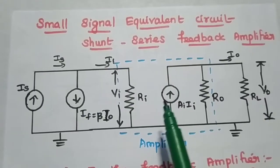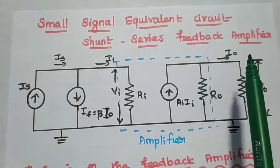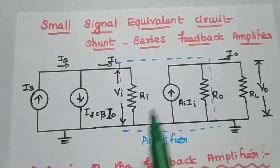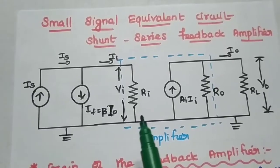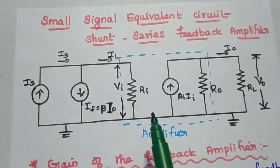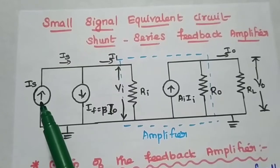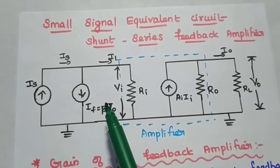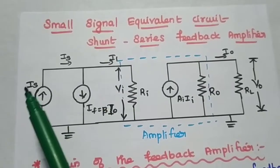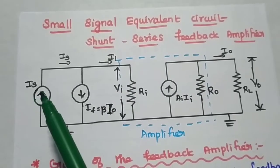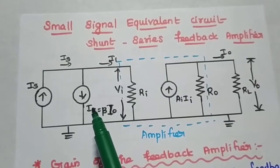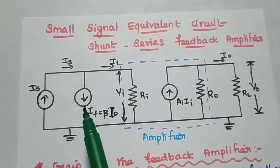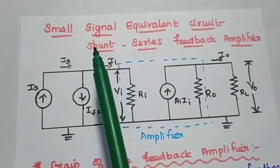This shunt series feedback is also known as a current amplifier. You have to remember this. For this current amplifier, the input impedance is low and output impedance is high. Next, we are going to analyze shunt series feedback amplifier using small signal equivalent circuit. Here the input is a current signal and the feedback signal is also a current signal. The input is represented with the current source is.